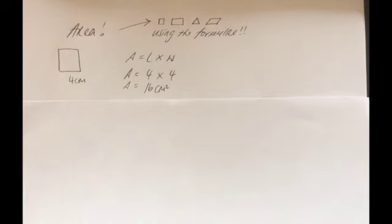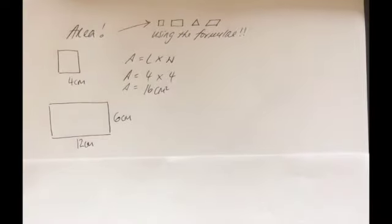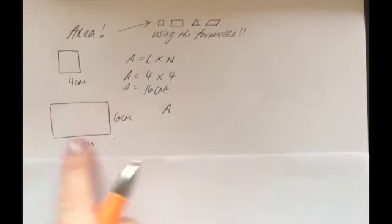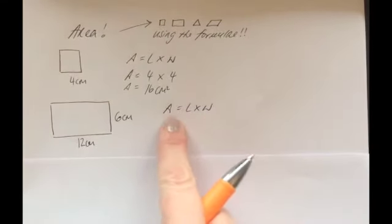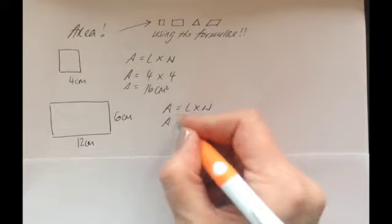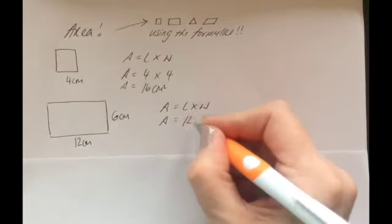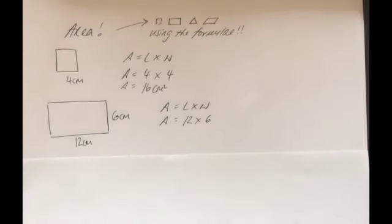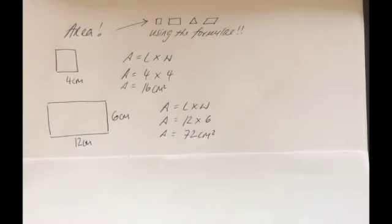Now we'll move on to a rectangle, which is going to be very similar because it uses the very same formula. Immediately when you identify the shape, write down the correct relevant formula in full: A equals L times W. We're looking for the area, so A is unknown. Length is 12 times width which is 6, so 12 times 6 is 72 centimeters squared.